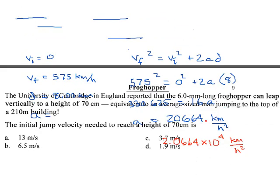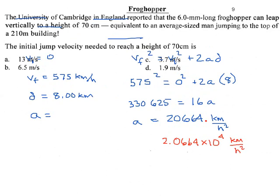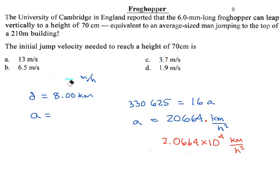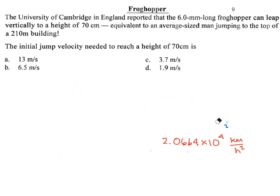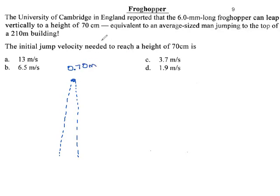What else have we got here? 6mm long froghoppers are some kind of bug. The University of Cambridge reported that a 6mm long froghopper can leap 70 centimeters up. They say that's as difficult as a person jumping 210 meters, so that is pretty impressive. We're talking about height at the top here of 70 centimeters. I'm just going to convert that into meters.